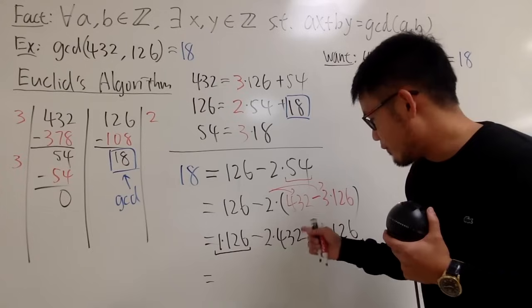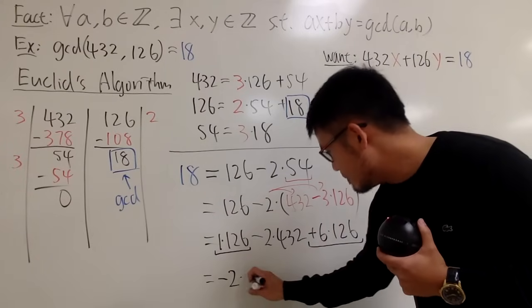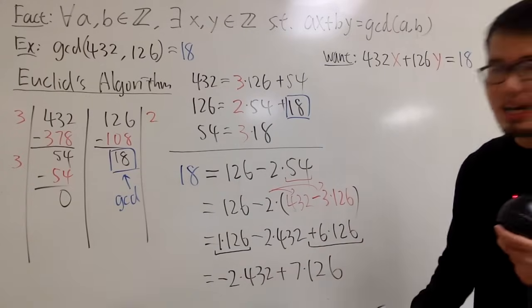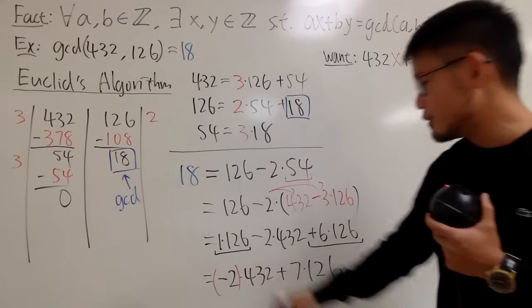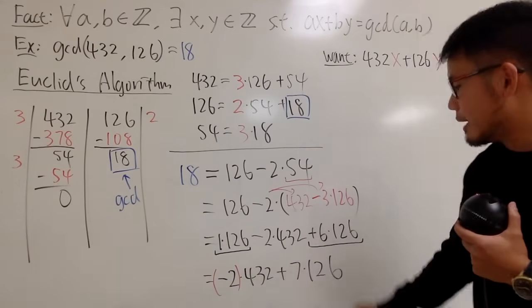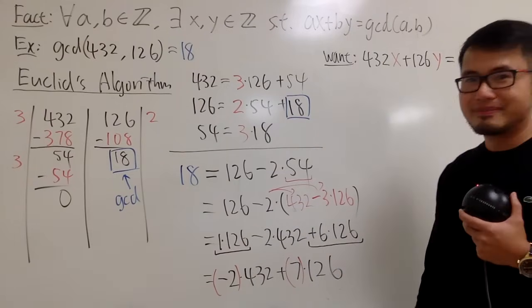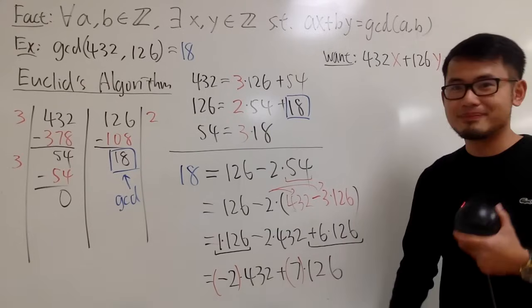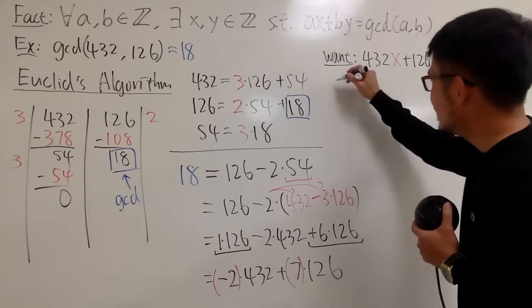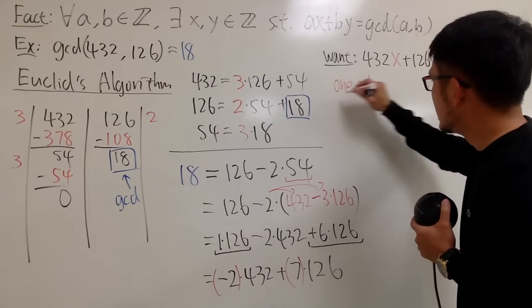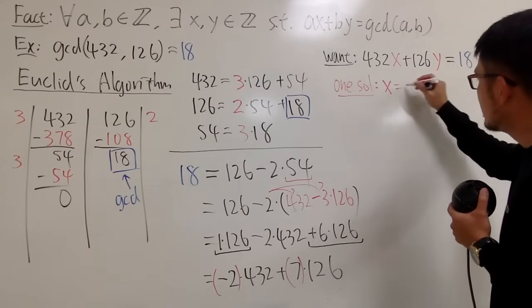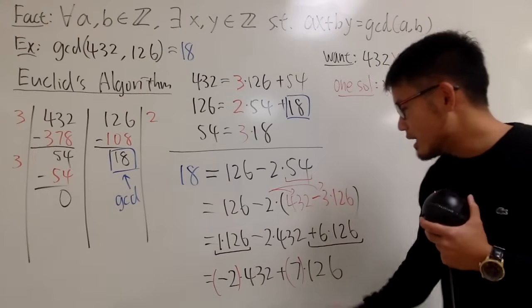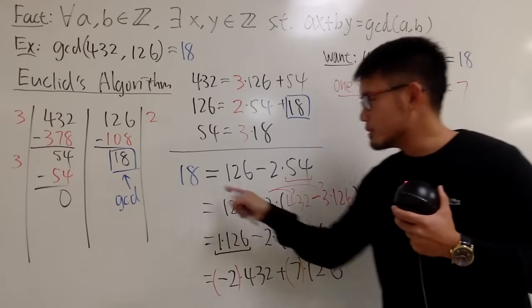So we have: 18 equals negative 2 times 432 plus 7 times 126. This is exactly what we want. One solution is x equals negative 2 and y equals 7. This works because negative 2 times 432 plus 7 times 126 equals 18.